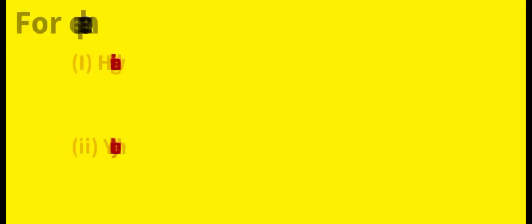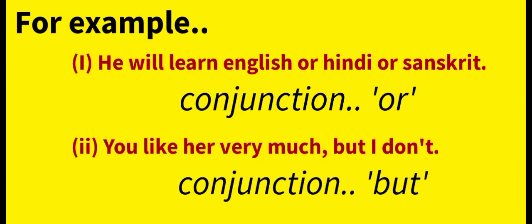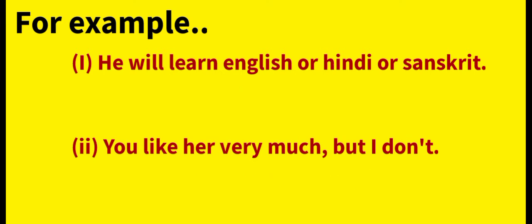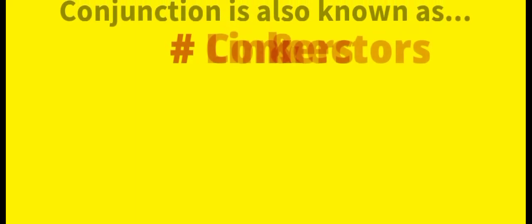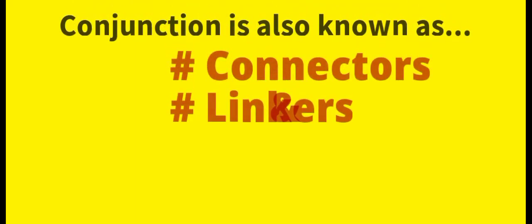For example: 'He will learn English or Hindi or Sanskrit.' The second example: 'You like her very much but I don't.' So you have conjunctions — 'or' in the first example and 'but' in the second. Conjunction is also known as connectors and linkers, as they connect sentences, phrases, and clauses to create meaningful sentences.